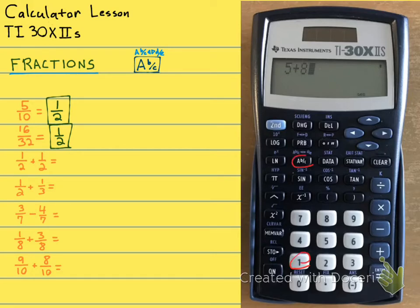So 1, ABC, 2, plus 1, ABC, 2. Hit the equals, and it should give you back 1.